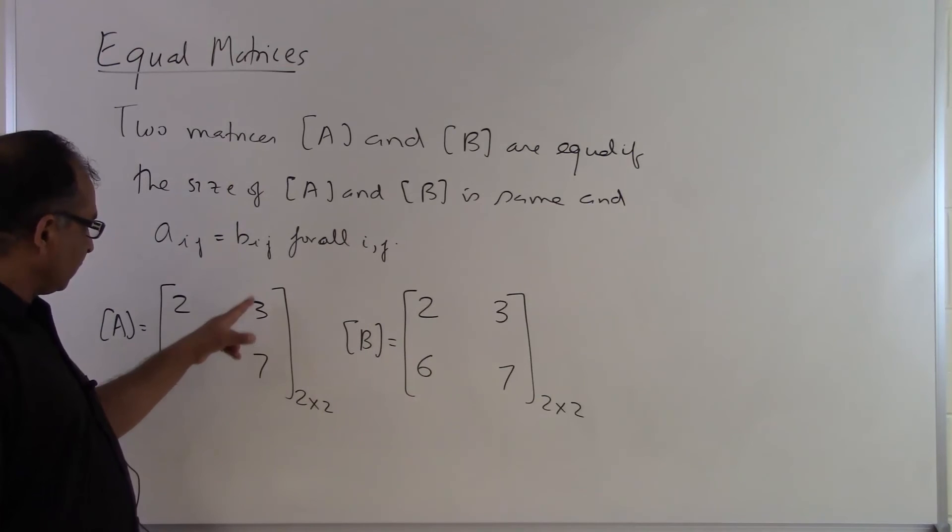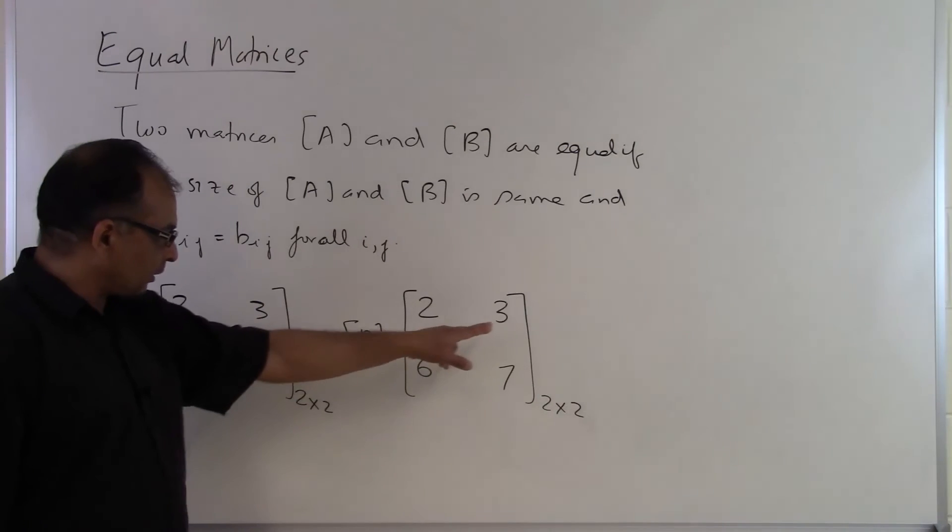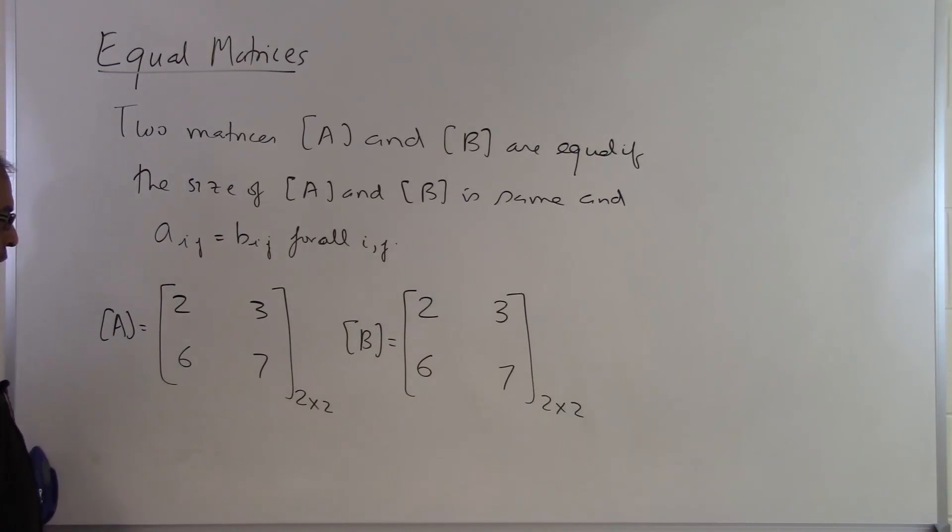So first row, first column has to be the same as first row, first column here, first row, second column has to be the same as first row, second column here, and so on and so forth.